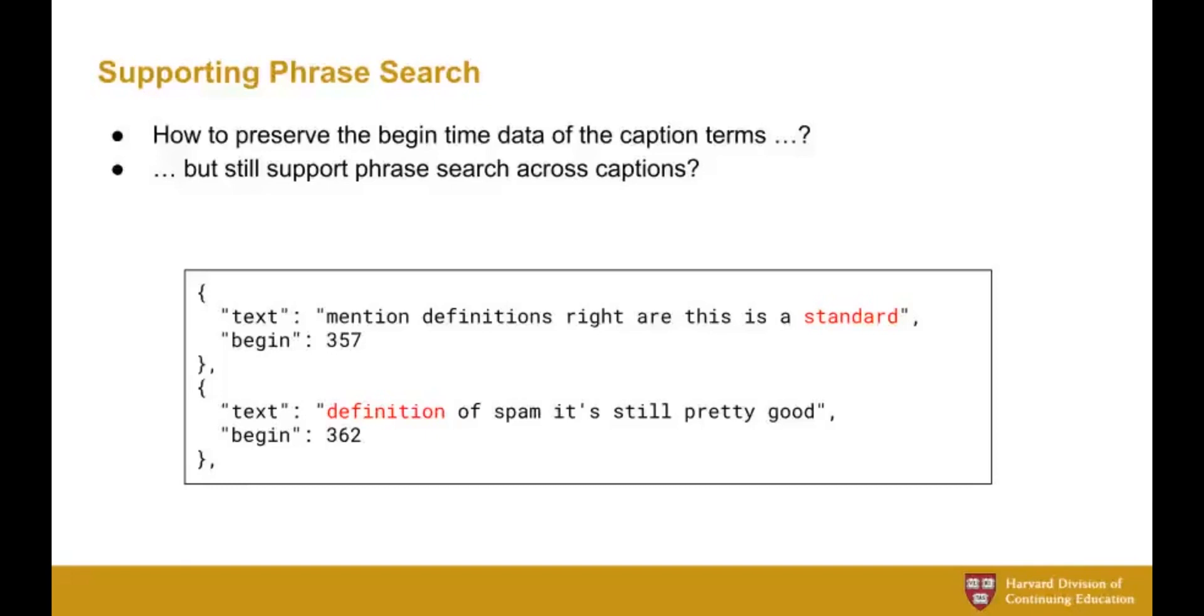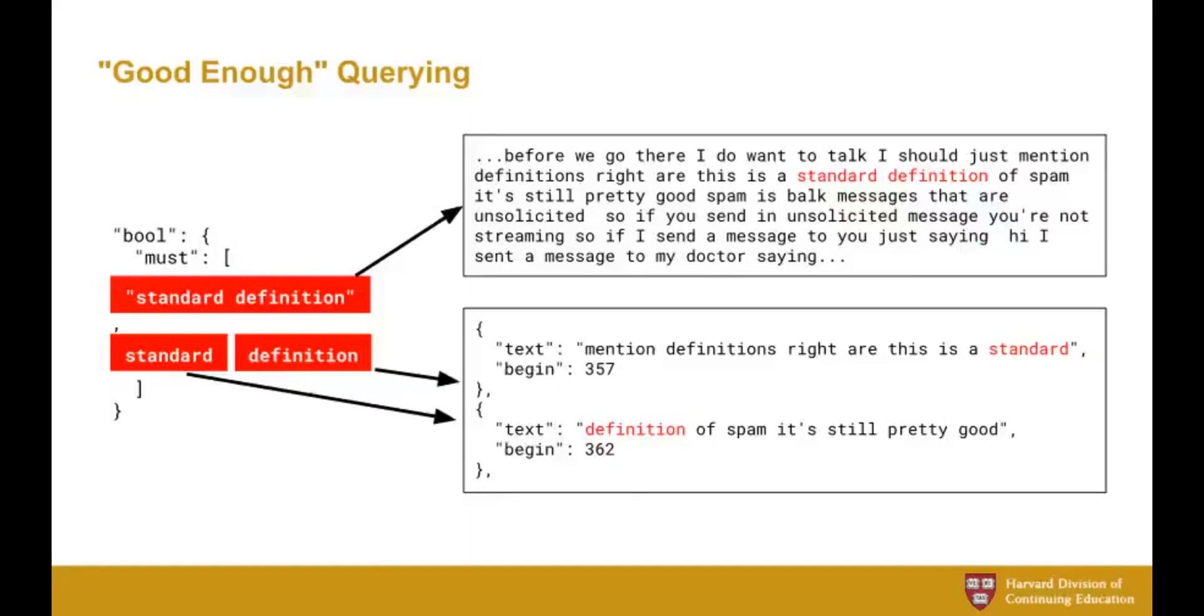What if instead you indexed just all of the caption content together like in a big text blob? Okay, so that would solve your phrase search problem, but then you've lost your index time context. So it's not enough to index the text twice. That's why we did it, index it twice, because we had to solve that scenario. But you can't just index it twice, you also have to construct your query in a particular way.